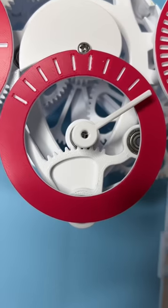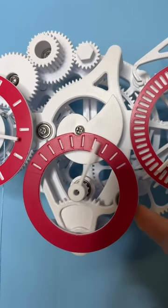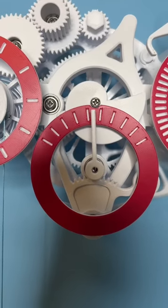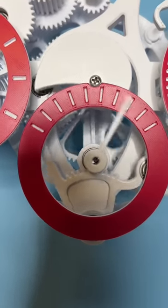The minute hand is connected to a retrograde complication. This means that it uses this cam and follower mechanism, and instead of sweeping a full 360 degrees, it only moves about 120 degrees before resetting to the zero point at the top of the hour.